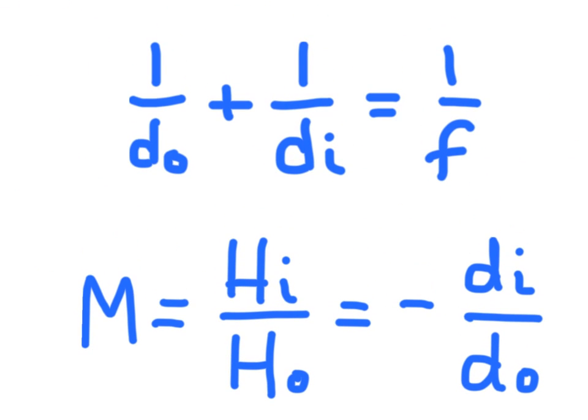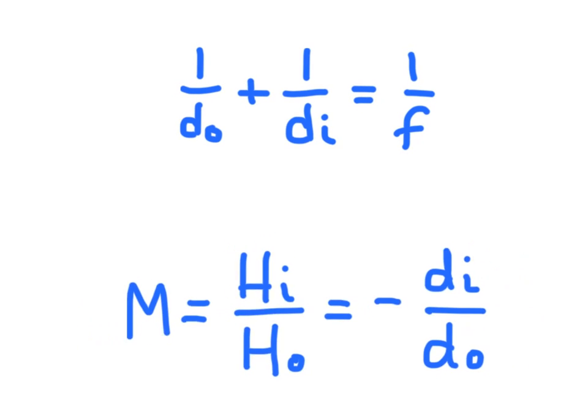So this is the mirror equation. That's the top one right here. This is kind of a second part to the mirror equation. This is called the magnification equation. Now we really use these equations together when we're solving problems.